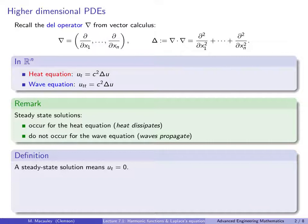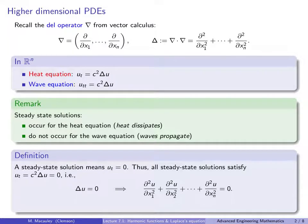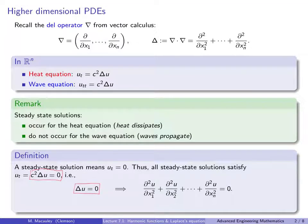A steady state solution means that u_t equals zero — the function is no longer changing with respect to time. Therefore, all steady state solutions of the heat equation satisfy: if u_t = c² Δu, setting u_t = 0 and dividing by c² gives Laplacian of u equals zero. So to find steady state solutions in n dimensions, we just need to find all functions whose Laplacian is zero — in other words, solve this PDE in n variables.